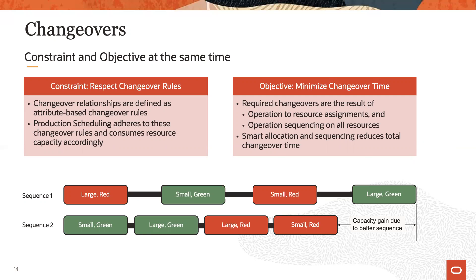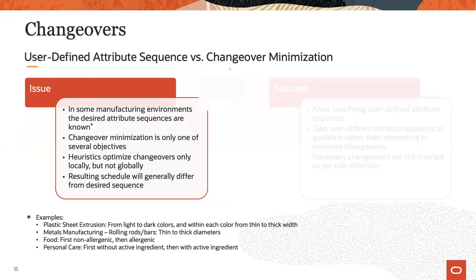Less changeover time equates to a gain of capacity, and it can result in improved throughput and saves costs. In some manufacturing environments, specifically in the process industry, achieving good or near-optimal attribute sequences is the overriding objective, since it has a big impact on overall throughput and ultimately the bottom line. Most scheduling solutions for real-world problems require the usage of heuristic methods, and therefore the resulting schedules will typically not be optimal from a changeover perspective — and Production Scheduling Cloud is no exception.